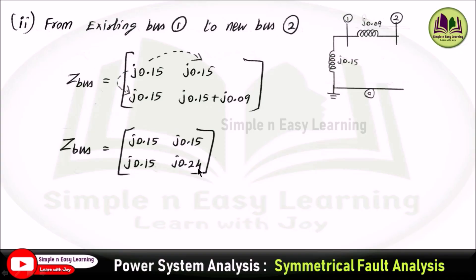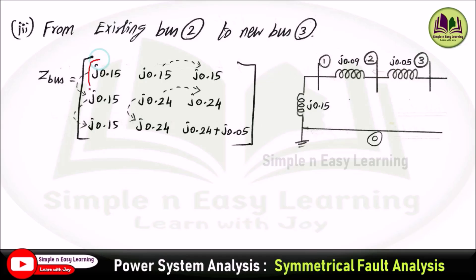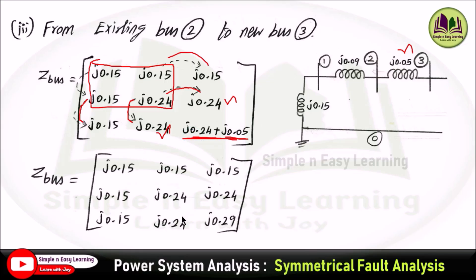From bus 2 (existing) to bus 3 (new bus) with reactance j0.05, the matrix becomes 3×3. The top-left 2×2 block is copied from the previous step: Z11 = j0.15, Z22 = j0.24, with corresponding off-diagonal terms. Z33 = Z23 + j0.05 = j0.24 + j0.05 = j0.29. This gives the complete 3×3 matrix.